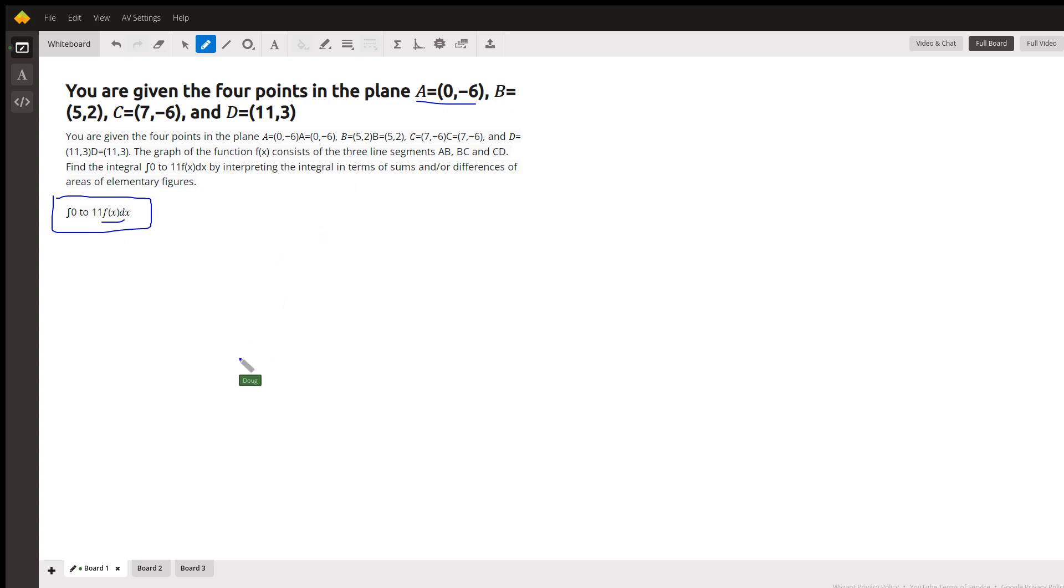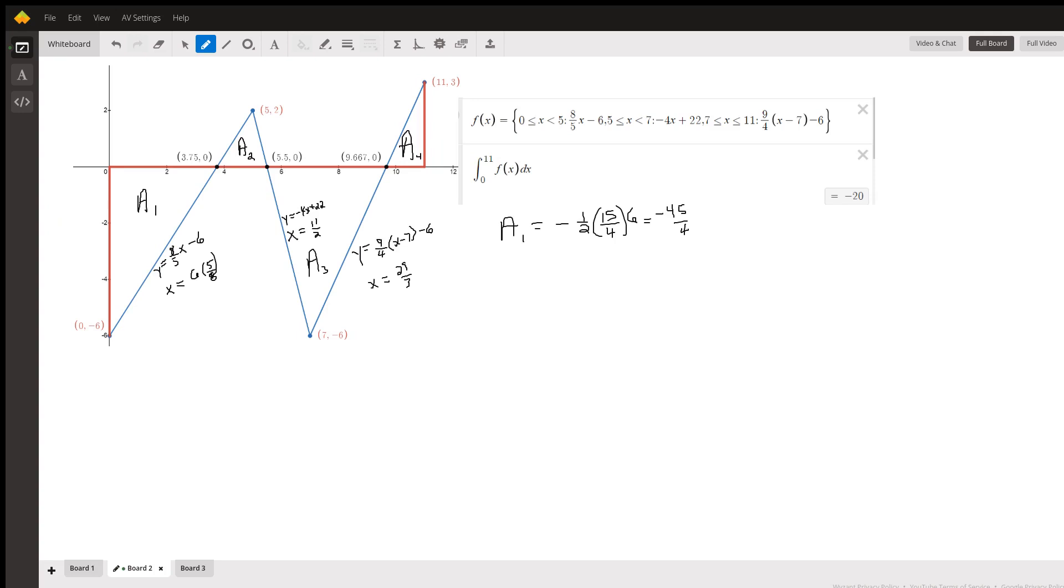Well, here's the diagram, created on Desmos. Here's the four points in segments A, B, B, C, and C, D.